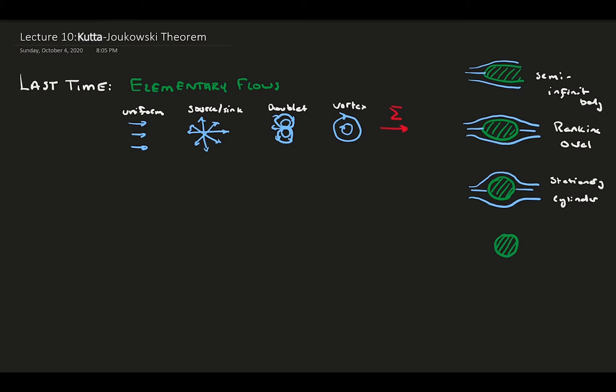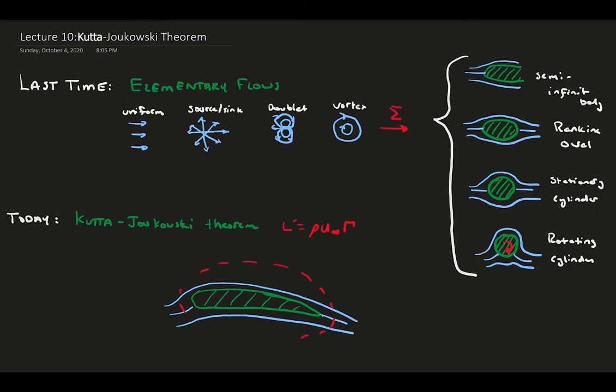By making flows with streamlined patterns that looked like these bodies, we could recreate the flow behavior as if the body existed in our flow. Today, we'll explore the rotating cylinder in more depth in order to introduce the Kutta-Joukowsky theorem, a powerful law in aerodynamics that relates a flow's circulation to the lift produced by a body.